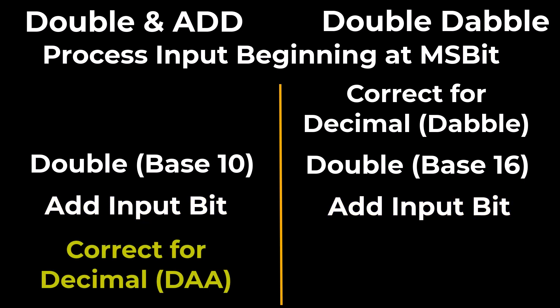We add the bit value in both methods. And then in the double and add, we have to come back and adjust the decimal value, and that's when we use the DAA instruction. So in both methods, we repeat the process once for each bit in the input stream. In the double and add method, we do the math and then adjust the result back to decimal, whereas in the double dabble method, we preemptively adjust the value before it is doubled.